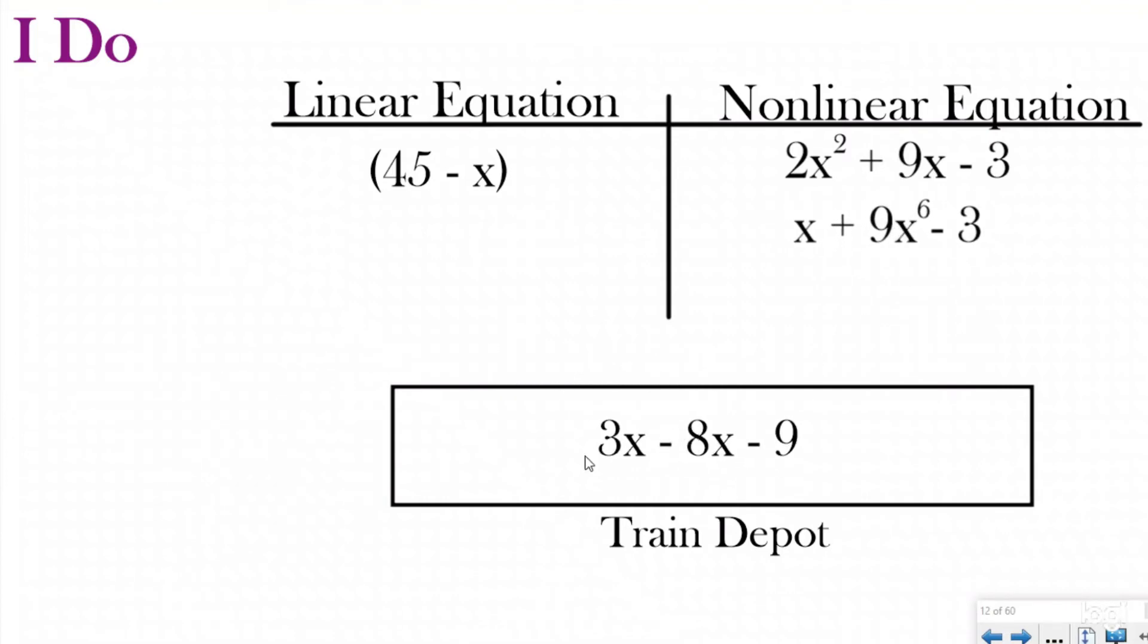Here I have my last one: 3x - 8x - 9. Again, I have three different terms—one constant, coefficient variable, coefficient variable—just to review some vocabulary. None of my terms are raised to a power greater than one, which makes this a linear equation.